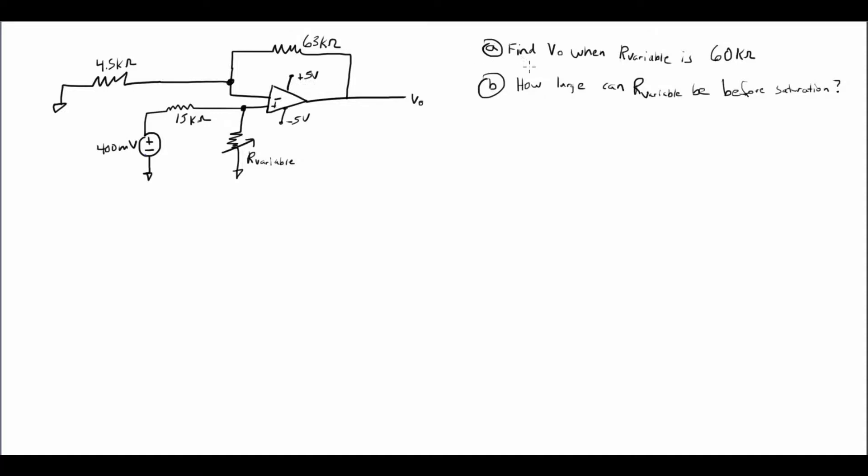So the first thing we want to do is whenever our potentiometer is set at 60 kiloohms, what is the output going to be? So the good news with non-inverting op-amps is that there's a standard circuit layout and there's a standard formula that goes along with it. So the first thing I'm going to do is I'm going to write out the standard configuration, and then I'm going to write out the standard formula.